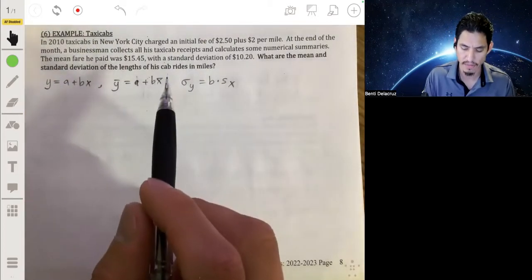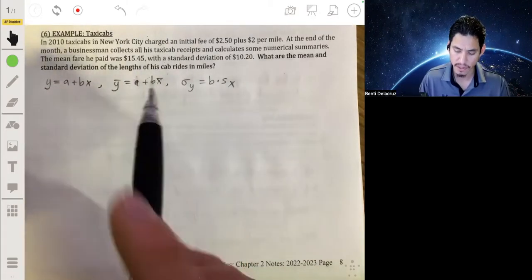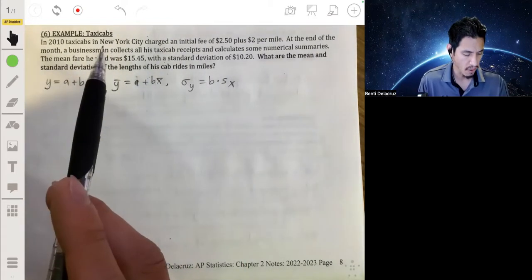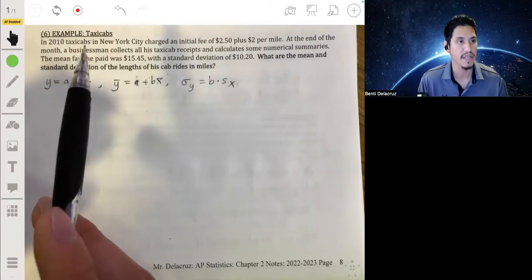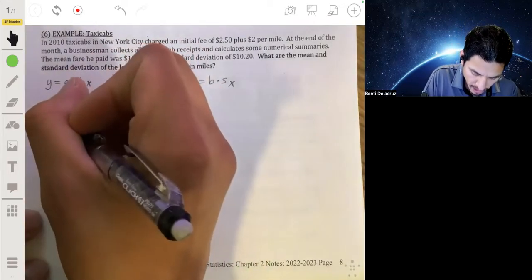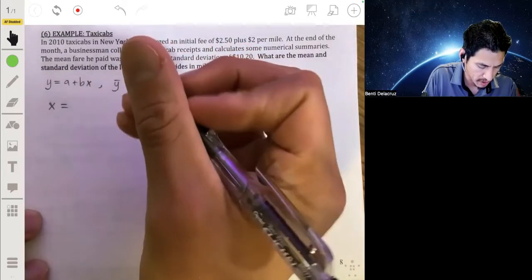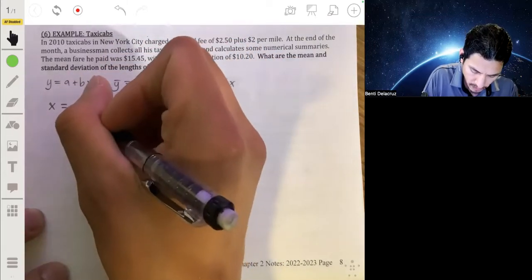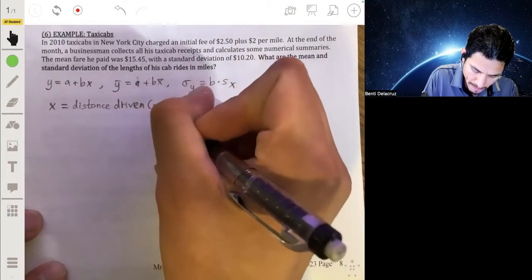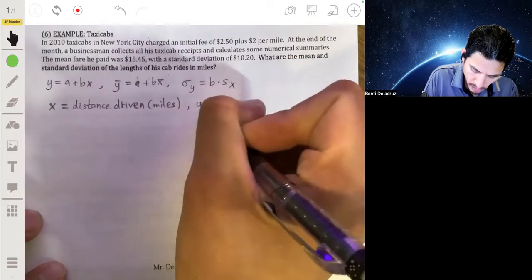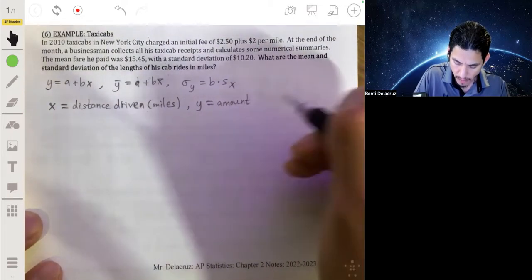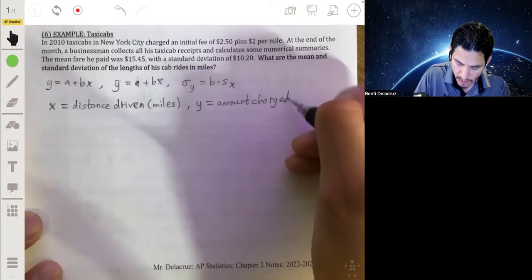So we have two variables here. You may not recognize it at first, but you have two variables where you're dealing with money and the distance driven. So what we do is we change how far a taxi cab drives and how much you're going to charge. So let's have x represent distance driven in miles. And y is going to be the amount charged, measured in dollars.